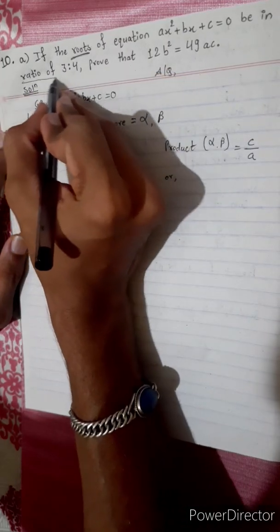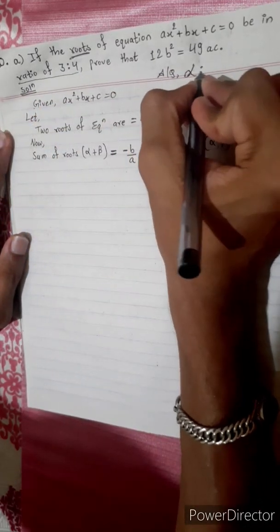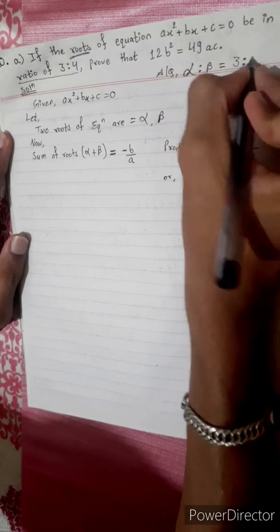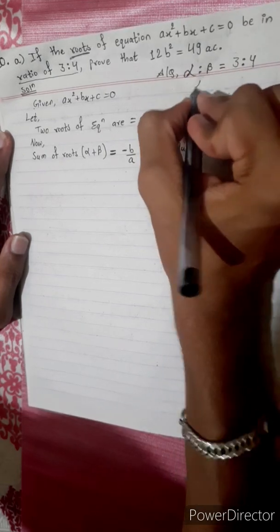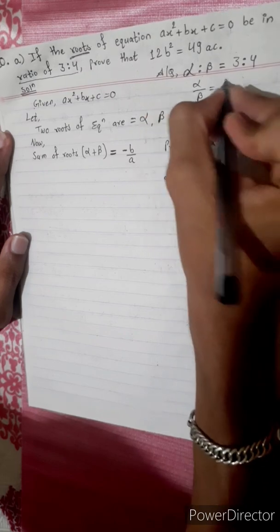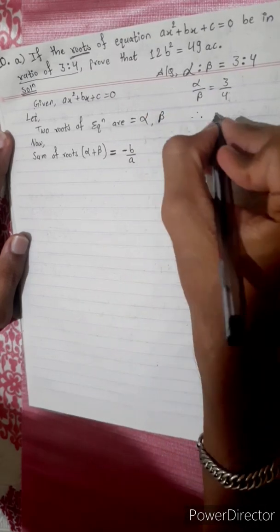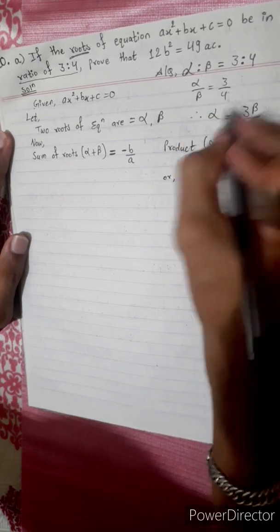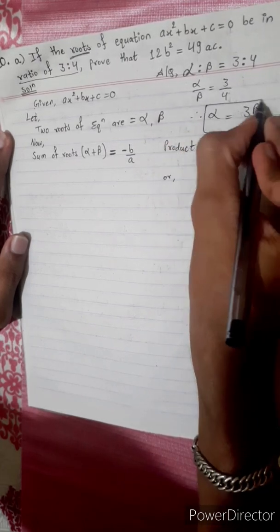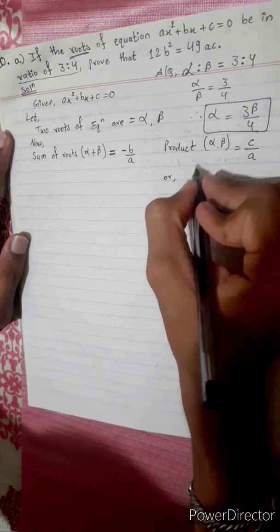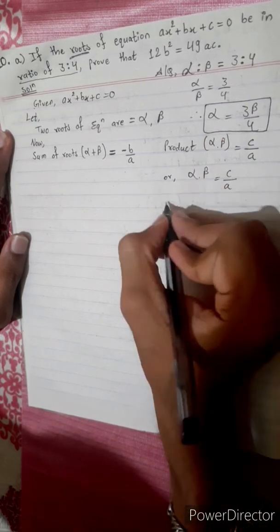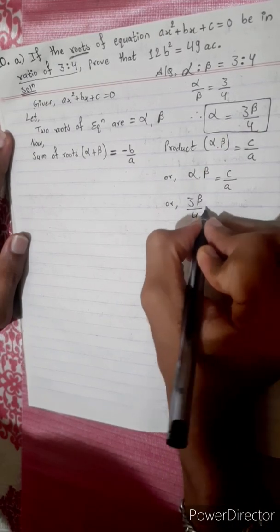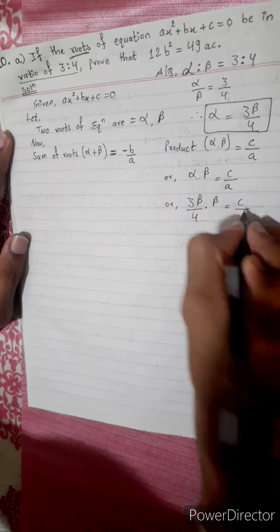The roots are in ratio 3 is to 4. Alpha is to beta is equal to 3 is to 4. Therefore alpha divided by beta equals 3 by 4, so alpha equals 3 beta by 4.